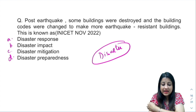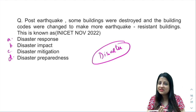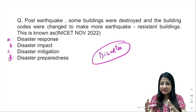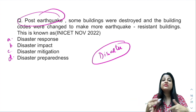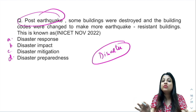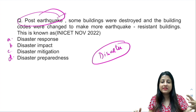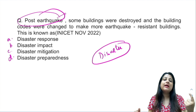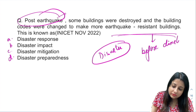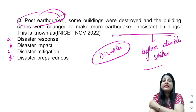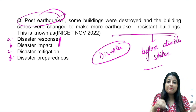The question says post earthquake, some buildings were destroyed and building codes were changed to make more earthquake resistant buildings. Earlier the buildings were not earthquake resistant; now they are made earthquake resistant based on the experience of the earthquake. Don't think that because it mentions 'post earthquake' it is disaster impact or response. They learned from what happened and now buildings are made earthquake resistant — this is being done before a disaster strikes.